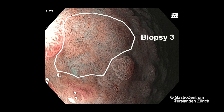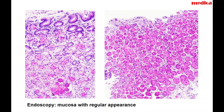We will ask the pathologist. There are some oxyntic glands and otherwise antral differentiation. You can already see here mild inflammatory lymphocytes and also some eosinophilic cells. This basically shows absolutely inconspicuous oxyntic mucosa.